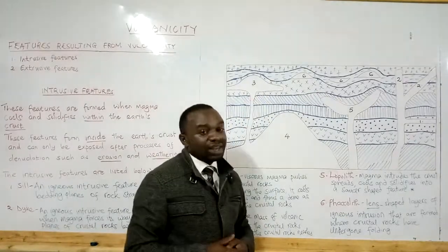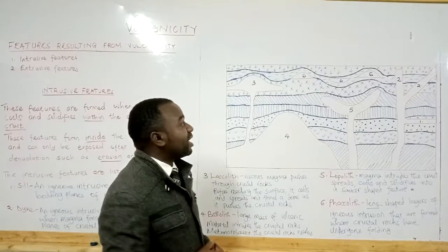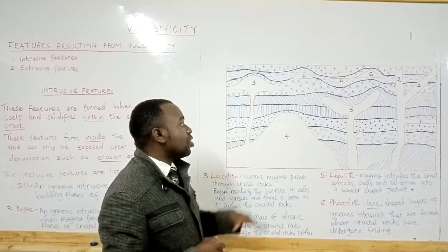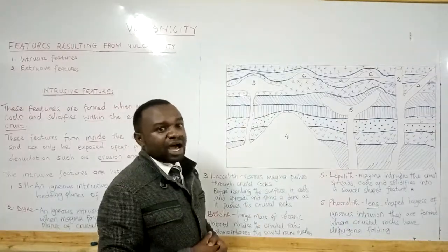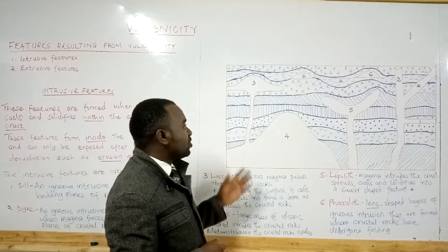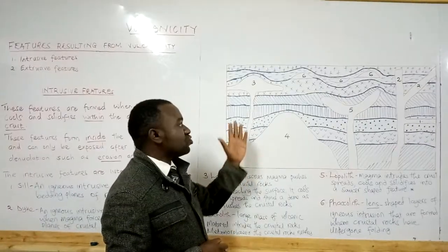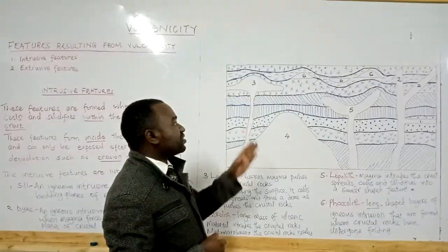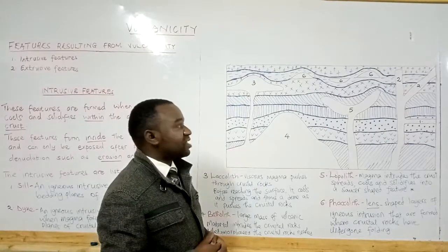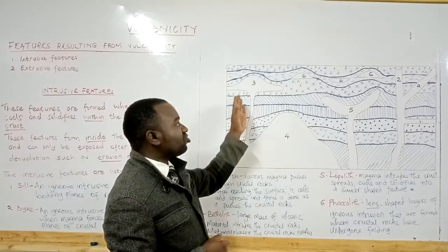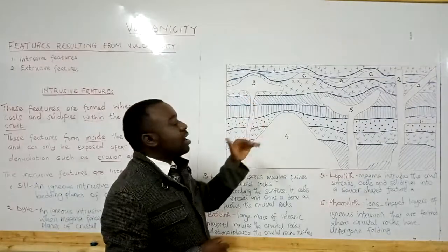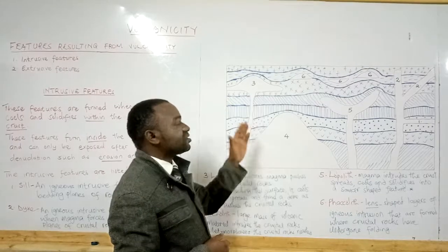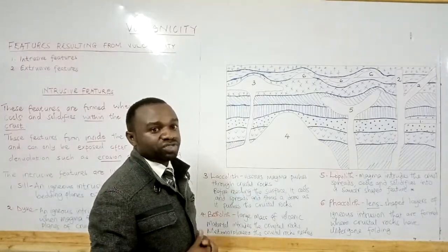The third feature is what we call a laccolith. A laccolith is a dome-shaped igneous intrusion with a flat base. It is formed when viscous magma intrudes the crustal rocks, spreads, and solidifies after cooling. The dome shape is a result of the magma pushing the crustal rocks above it, so the overlying rocks assume the shape taken by the magma intrusion.